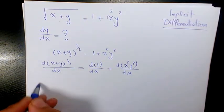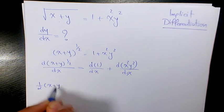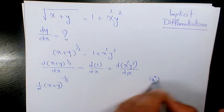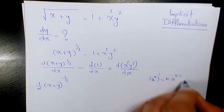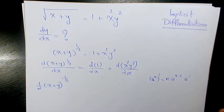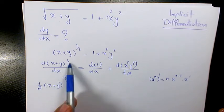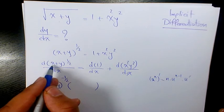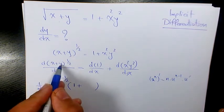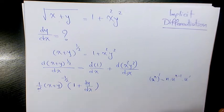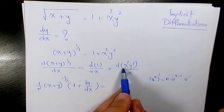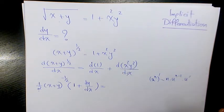The first one is going to be 1 over 2 times x plus y to the power of negative 1 over 2. Whenever you have u to the power of n, the derivative will be n times u to the power of n minus 1 times u prime. We have exactly the same thing here: 1 over 2 times x plus y to the power of negative 1 over 2, times u prime which is 1 plus dy over dx. Derivative of 1 with respect to x is 0, and for x squared y squared we need to use the product rule.